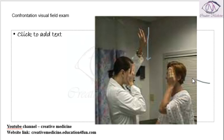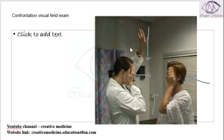Similarly, the doctor brings his hand from the right side and asks the patient where he can see the hand. A similar process is done for the left side and downwards. By this method, we can calculate the visual field.